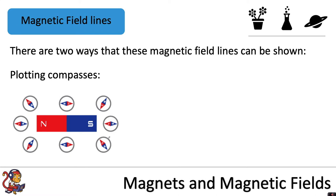Plotting compasses is one way. Here we've got several small compasses going around a bar magnet, and you can see that the north is pointing towards the south at all times. If you extend these as lines it would start looking like our magnetic field lines, always going out of the north and from north to south and into the south.